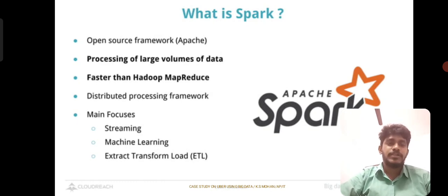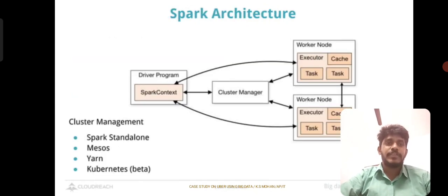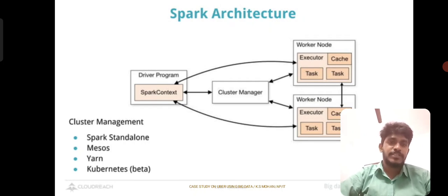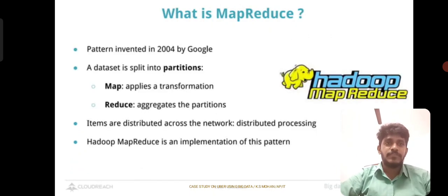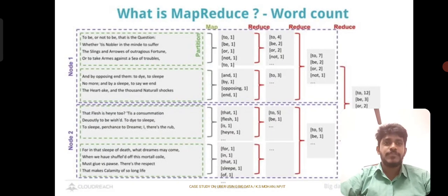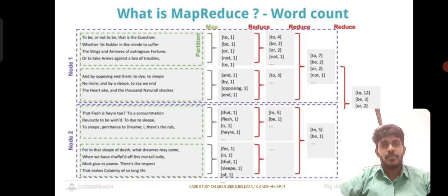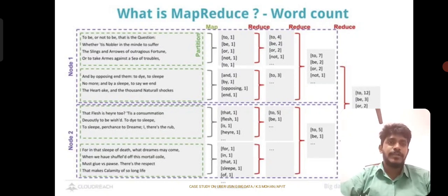In the Spark architecture, we can see how the driver program and Spark context are managed by the cluster manager, and how worker nodes are classified. MapReduce helps reduce a bigger problem into simpler pieces across Node 1, Node 2, etc., and the entire solution is finally combined into a single solution.